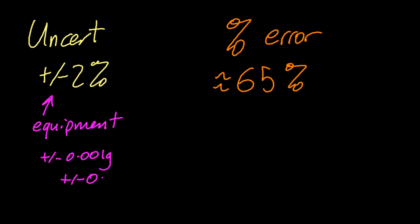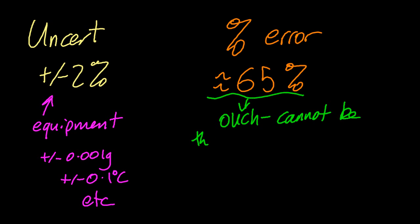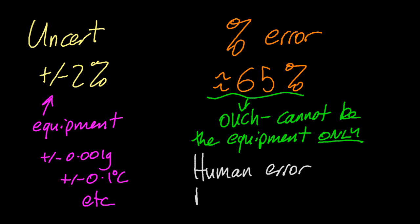So the uncertainties, once again, are from the innate nature of the equipment. The percent error, I can't blame it on my equipment. It's got to be something else as well. Perhaps human error. Perhaps the procedure wasn't very good.